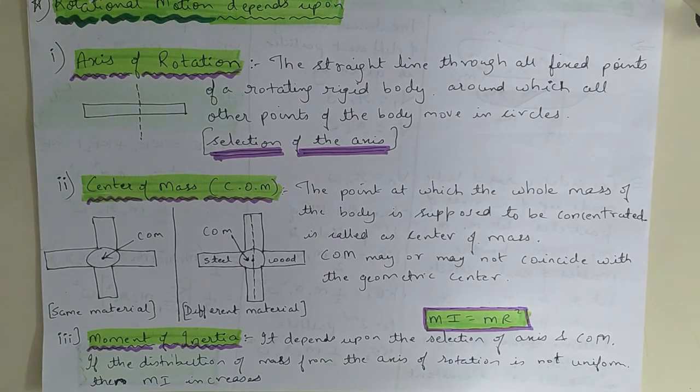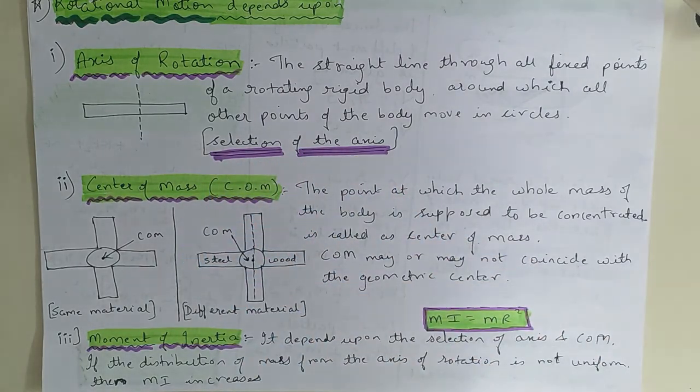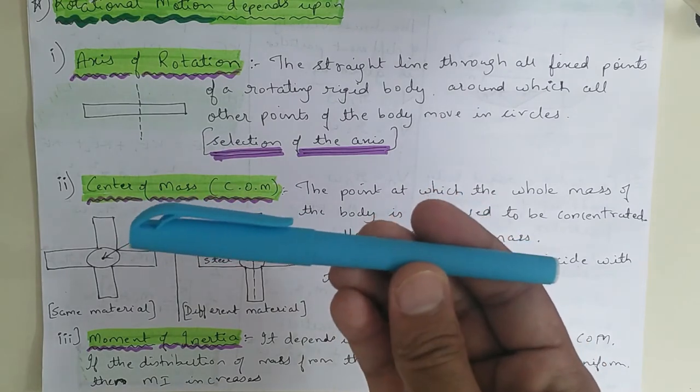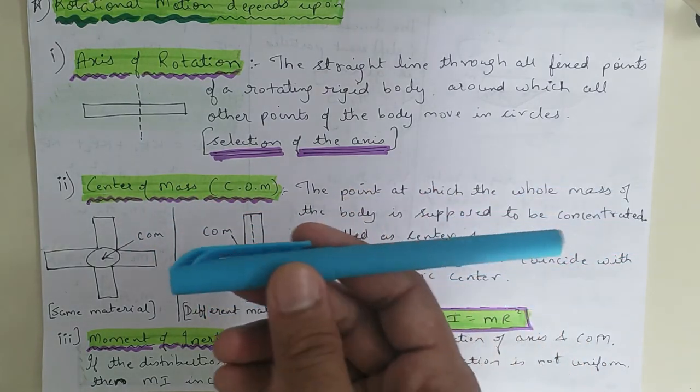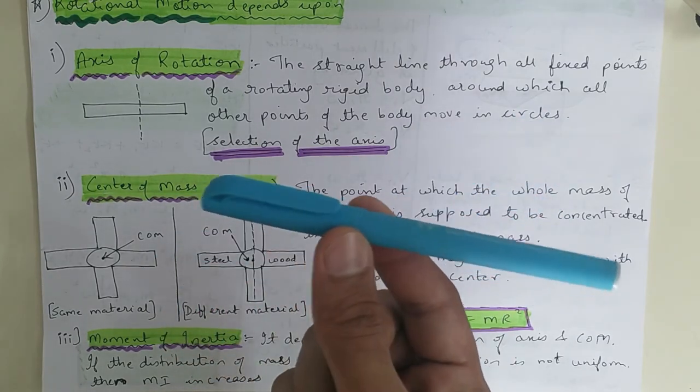Third is moment of inertia. Moment of inertia totally depends upon selection of axis and center of mass. Means it will depend on both - on my selection of axis and on center of mass. Now in this example of pen, I can select my axis anywhere. If I pass my axis through center of mass, where will the center of mass be? It will be at this point. Because at this point, if you see the pen, it's balanced in equal halves.